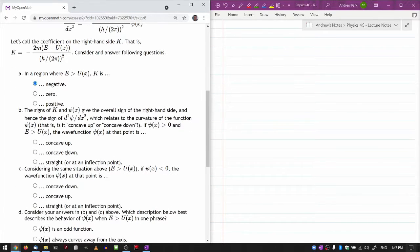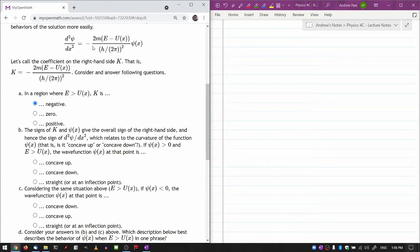And the signs of k and psi of x give the overall sign of the right-hand side here, and hence the sign of the second derivative.